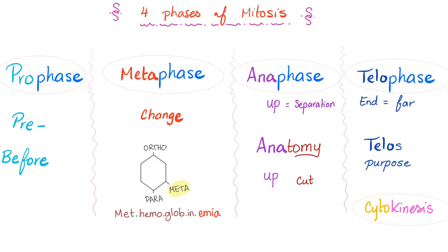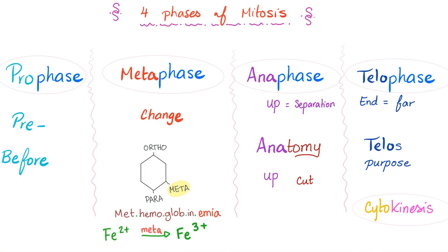Metaphase. What does 'meta' mean? Meta means change. If you remember your organic chemistry, in the 6-carbon ring, there was the ortho position — ortho means straight — and para because it's parallel to the ortho. But meta is change. There is a condition in medicine called methemoglobinemia. Emia means blood, hemoglobin is in your red blood cell, and 'met' means change, because your hemoglobin has been changed from Fe2 to Fe3 — from ferrous to ferric. So meta means change.